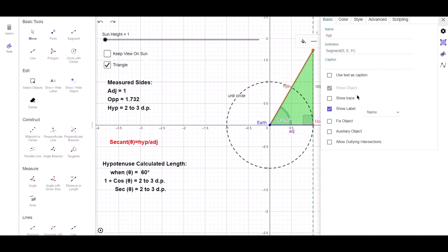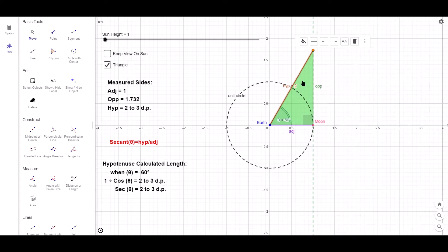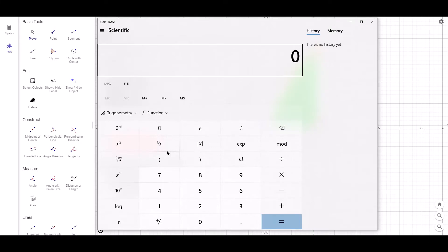So in this example, where theta is 60 degrees, the Sun is exactly 2 moon distances away from Earth. And just to check this, sec theta is hypotenuse over adjacent, so that's 2 over 1, so sec 60 will equal 2. So using the calculator, we have 60, and use the secant function, and the answer is 2.